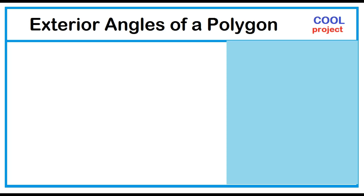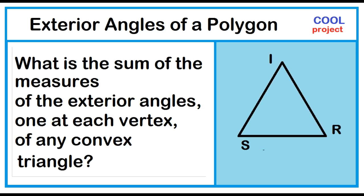Exterior angles of a polygon. What is the sum of the measures of the exterior angles, one at each vertex, of any convex triangle? Let's find out the sum of the measures of the exterior angles, one at each vertex, of a convex triangle.